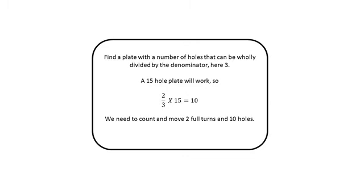So we need to find an indexing plate where the number of holes can be wholly divided by the denominator that we have here, a 3. So in this example, a 15 hole plate will work perfectly. 2 thirds of our 15 hole plate will give us 10, 10 holes, which means we need to count and move 2 full turns of the handle, plus a further 10 holes in order to produce the angle that is required for the number of teeth.